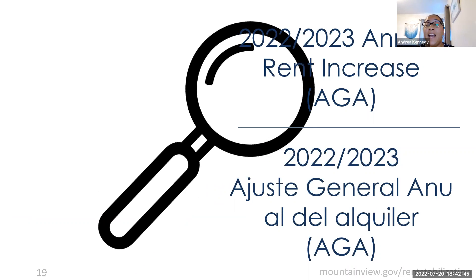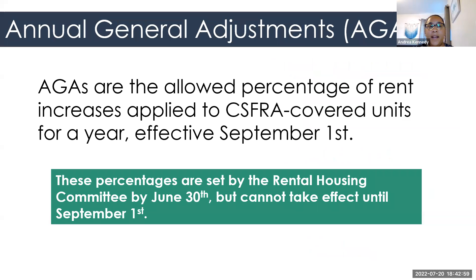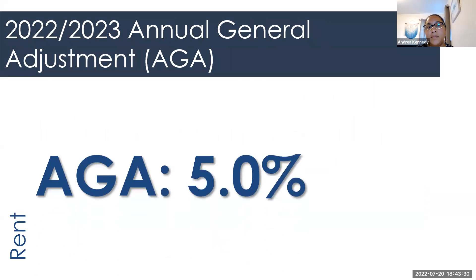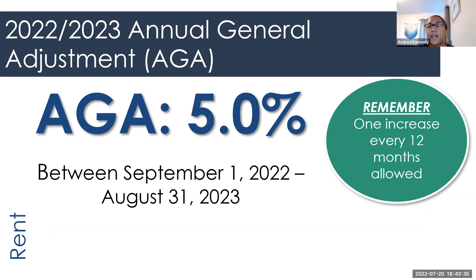Now let's look at the AGA, the annual rent increase that's going to be allowed for fiscal year 2022-2023. Our AGAs, or annual allowed rent increases, are the allowed percentage of rent increase that can be applied to CSFRA-covered units for a specific year. We announce these rent increases in June, but they cannot take effect until September 1st. The upcoming rent increase is 5%. However, it cannot start being implemented until September 1st, 2022, and it runs through August 31st, 2023. Then on September 1st, 2023, we'll have the next rent increase allowed for the year.